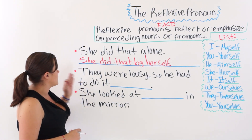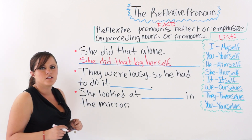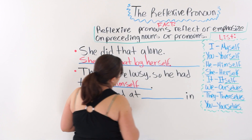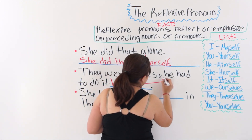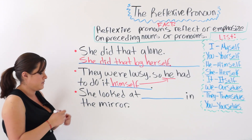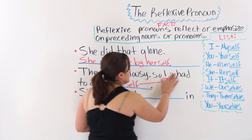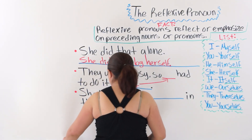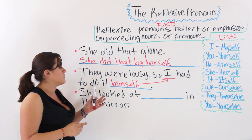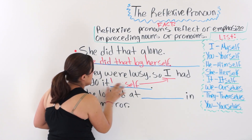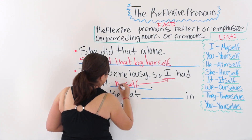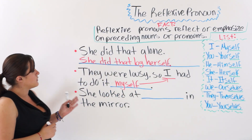The next one is: they were lousy, so he had to do it himself. We use 'himself' because it reflects on the personal pronoun 'he.' What would happen if instead of 'he' we used the personal pronoun 'I'? They were lousy, so I had to do it — we would change the reflexive pronoun because 'himself' does not correspond to 'I.' So we would change it to 'myself': they were lousy, so I had to do it myself.